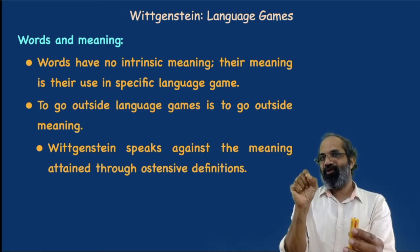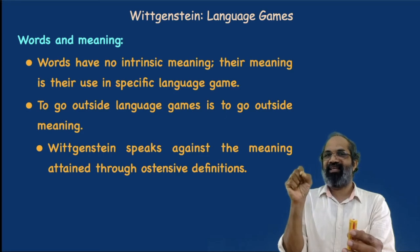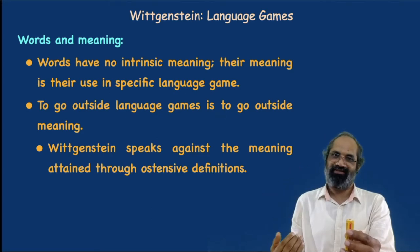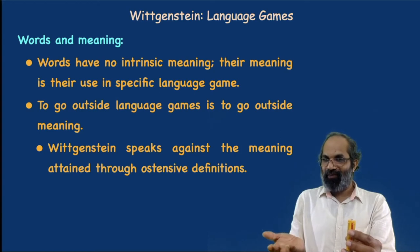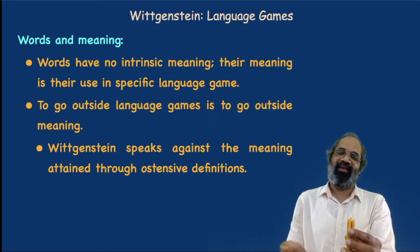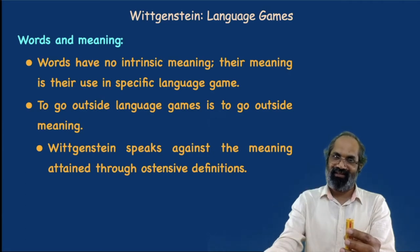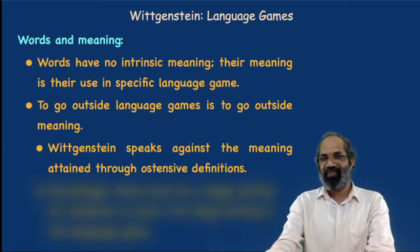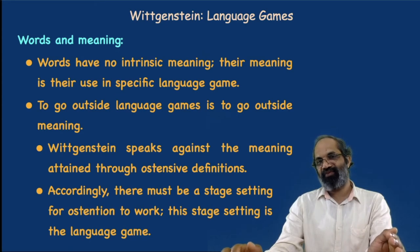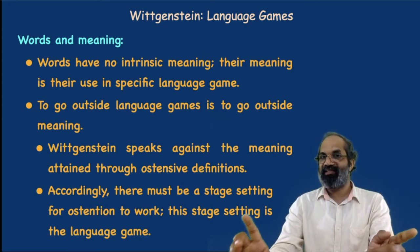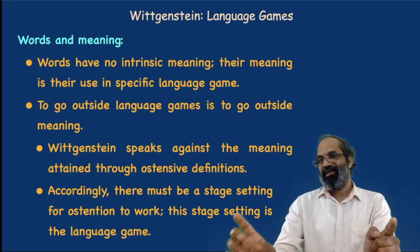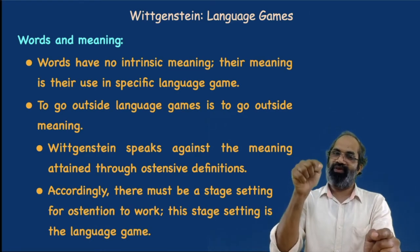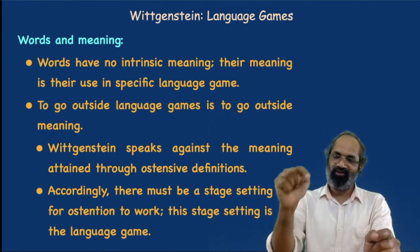You rightly understood it only because there was a previous stage-setting that took place between us through our living in the world. It is only within that stage-setting that even ostensive definition can work. As Wittgenstein says, there must be a stage-setting for ostensive definition to work, and that stage-setting is the language game. It is only in a language game that even the most definite way of giving meaning can work — it also requires a stage-setting.